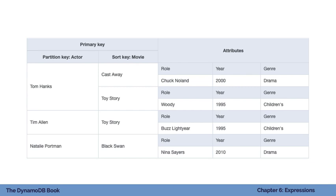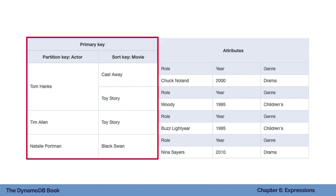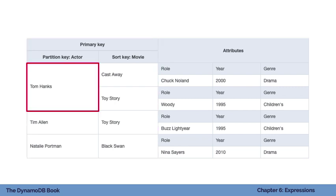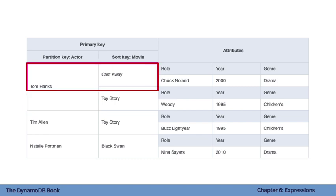Let's look at an example using the movie roles table. With that query, you can only operate on the primary key — the partition key of actor and the sort key of movie — but not other attributes like role, year, or genre. You must specify the partition key. If you want all movies for Tom Hanks, you say actor equals Tom Hanks. You can also add a sort key condition, like getting all Tom Hanks movies between A and M — that gives you Castaway but not Toy Story.